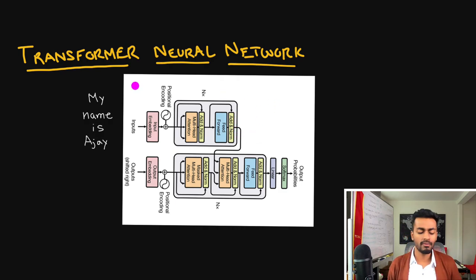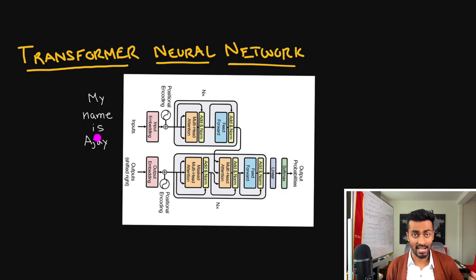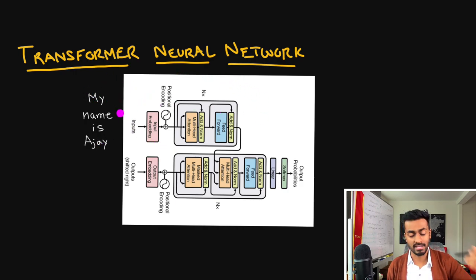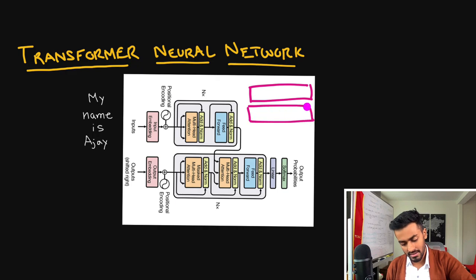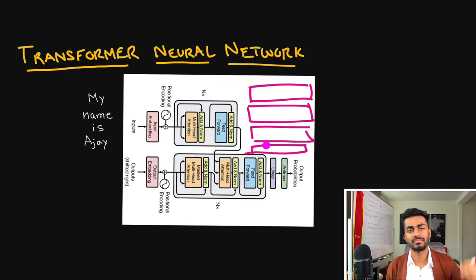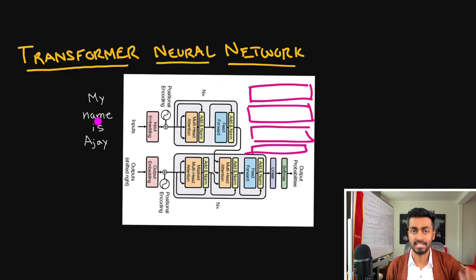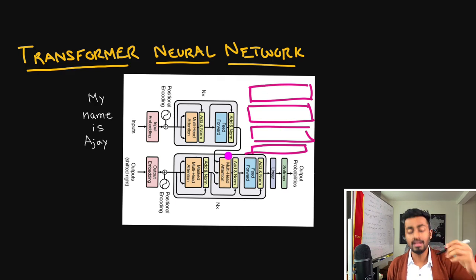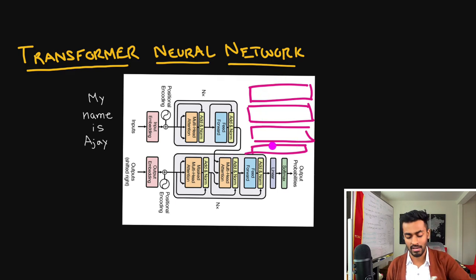At a high level, when we want to perform translation — say from English to French — we take an English sentence like 'My name is AJ.' We pass this into the transformer encoder, all tokens passed in simultaneously, and these generate four vectors also simultaneously that correspond to each word. These vectors better encapsulate the context of the word within the sentence, and hence are better representations of meaning — they can be used by the decoder to assist in translation.